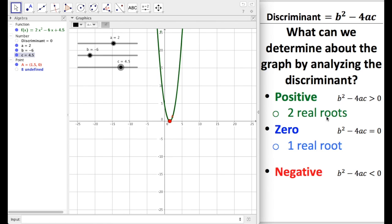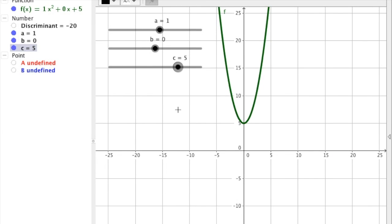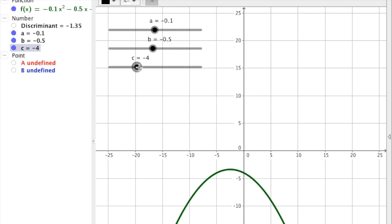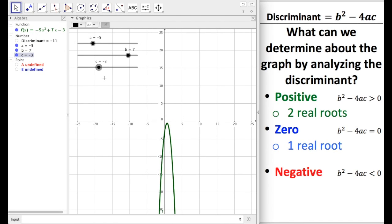Now, what about negative? I got a discriminant of negative 20 when a is 1, b is 0, and c is 5, and I did not have any roots. I got a discriminant of negative 1.35 when a is negative 0.1, b is negative 0.5, and c is negative 4. And again, I didn't have any roots. And lastly, I got the discriminant of negative 11 when a is negative 5, b is 7, and c is negative 3. And again, no roots.